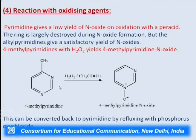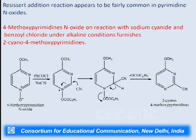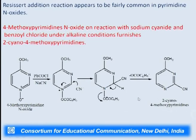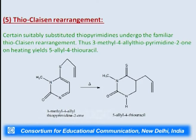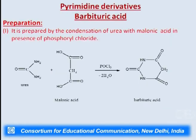The Reissert addition reaction also appears in pyrimidine N-oxides. 4-methoxypyrimidine N-oxide on reaction with sodium cyanide and benzoyl chloride furnishes 2-cyano-4-methoxypyrimidine as the final product — the cyano group attacks as a nucleophile on the pyrimidine ring and rearranges to give the product. Pyrimidine also undergoes the Dimroth rearrangement. Certain suitably substituted thiopyrimidines undergo this rearrangement; thus 3-methyl-4-allylthiopyrimidine-2 on heating yields 5-allyl-4-thiouracil.